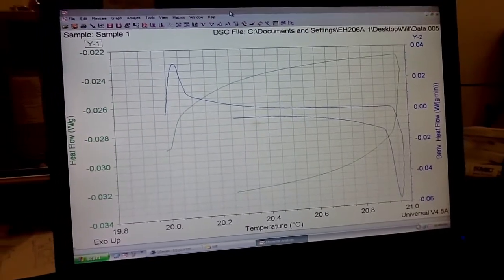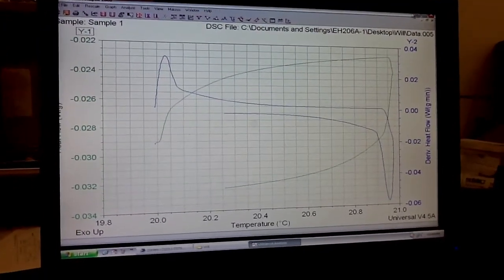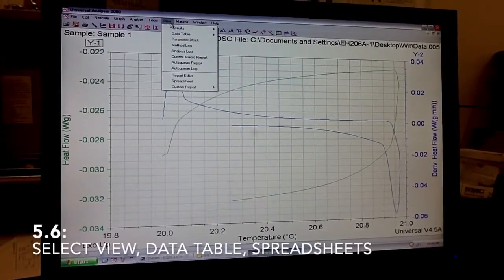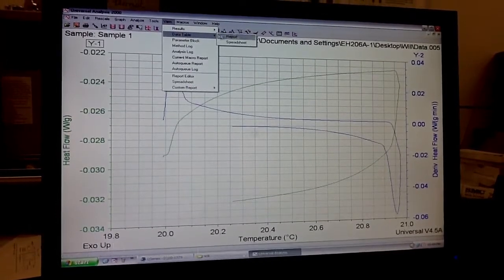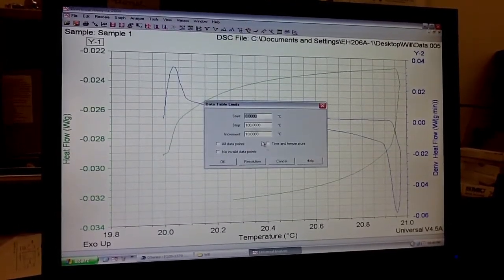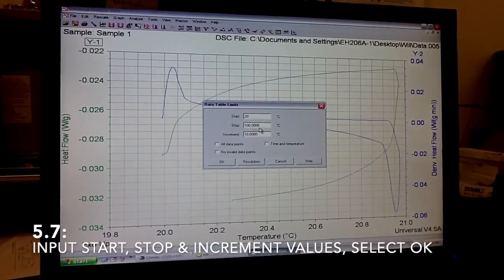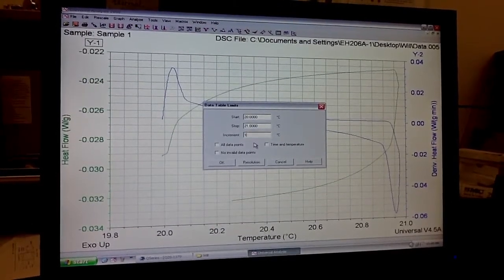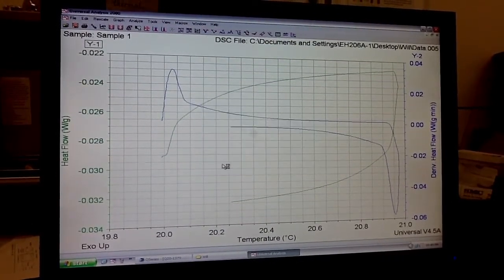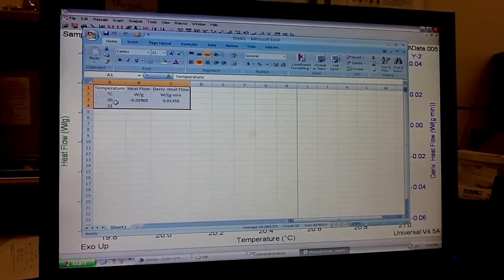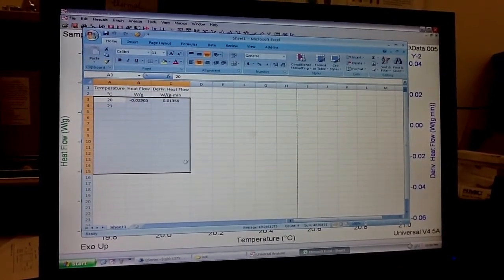And once you have this screen up, then you can come up here to View, Data Table, and Spreadsheet. Put in the parameters here. And it will pop up with an Excel sheet that you can use.